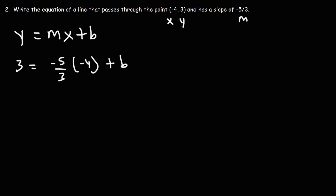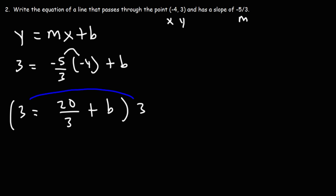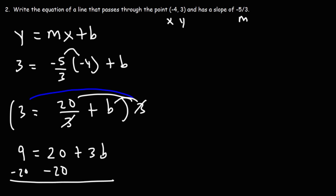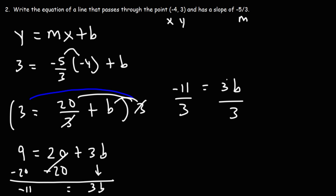Let's calculate the value of b. Negative 5 times negative 4 is positive 20, so we have 3 = 20/3 + b. To solve for b and clear the fraction, multiply everything by 3: 3 · 3 = 9, and 3 · (20/3) = 20, giving us 9 = 20 + 3b. Subtracting 20 from both sides: 9 - 20 = -11, so -11 = 3b. Dividing by 3, b = -11/3.